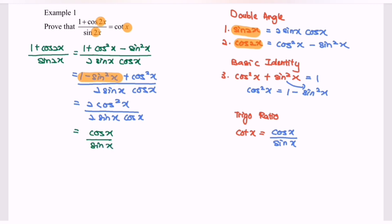From here, again referring to the trig ratio, we notice that cos x over sin x is equal to cotangent x.